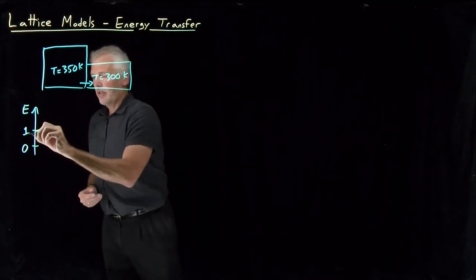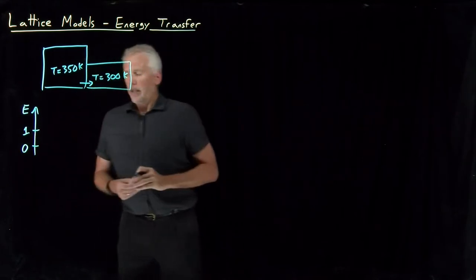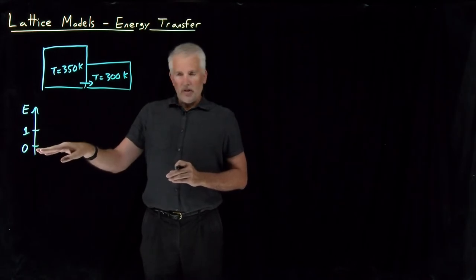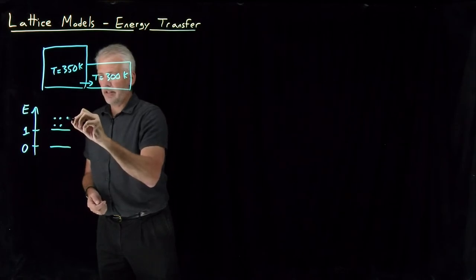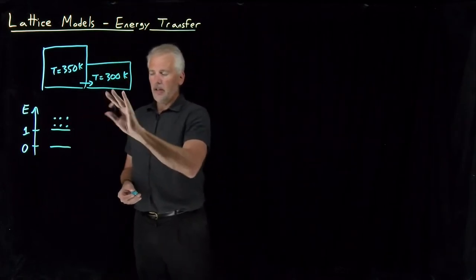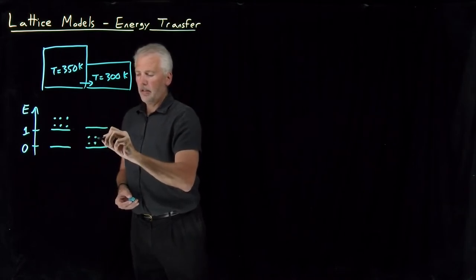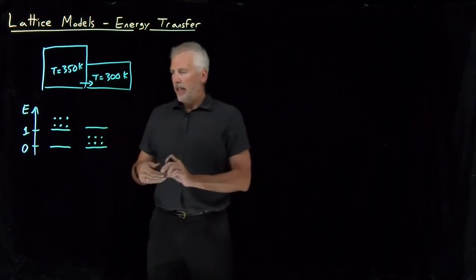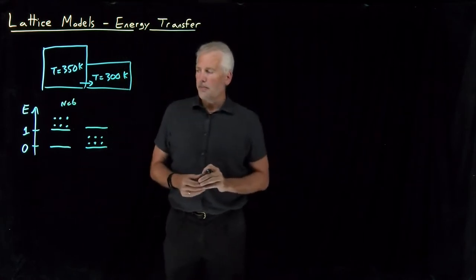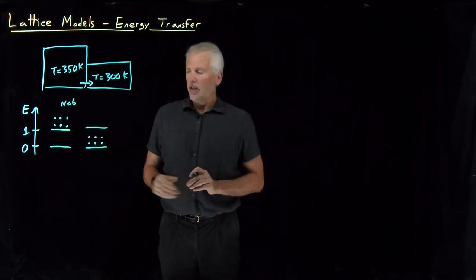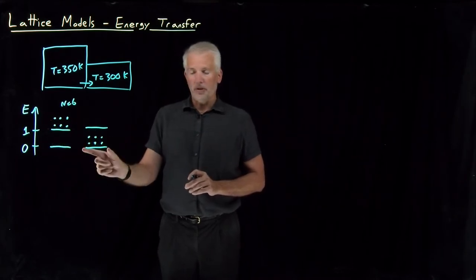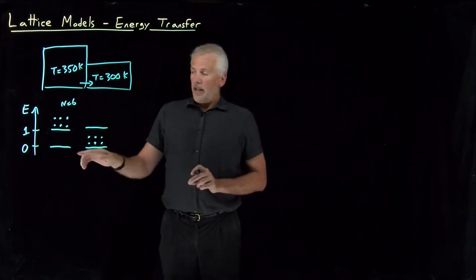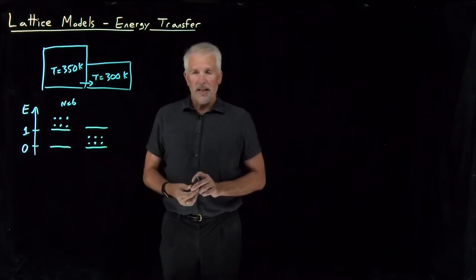In this very oversimplified system, molecules can have an energy of zero or they can have an energy of one — a little energy or more energy. On the hot side, I've got six molecules that have a lot of energy (energy one), and on the colder side, I've got six molecules that have less energy (energy zero). That's the microstate of the system — I've shown each individual molecule and how much energy it has.